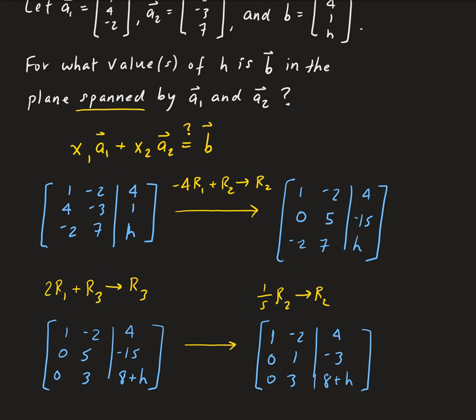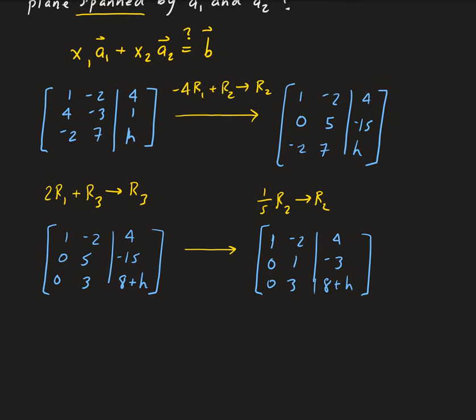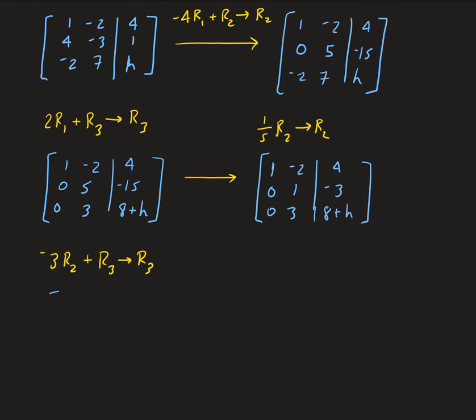So we're going to take minus 3 times row 2, add it to row 3, and store the result in row 3. Row 1 stays 1, negative 2, 4; row 2 stays 0, 1, negative 3. In row 3 we get 0, 0, and then minus 3 times negative 3 is 9, so 9 plus 8 is 17, plus h — giving us 17 plus h.